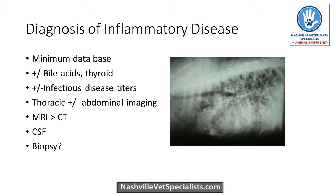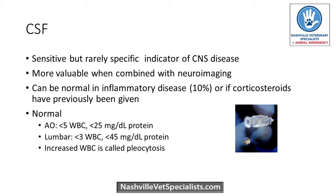Other things to consider depending on the signalment and history include bile acids, infectious disease testing, and potentially chest or abdominal imaging — though you don't do all of those on every patient. Ultimately, we're often looking at advanced imaging like MRI and CSF analysis to get diagnoses in these cases. CSF is very important for diagnosing inflammatory disease, and there are a few diseases where it's the only test needed. However, it's often done in combination with imaging to really put together the whole picture.